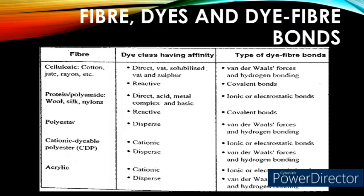In this chart we are going to learn about, for a particular fiber dyed with a particular dye stuff, what type of dye-fiber bond will be formed. For example, cellulosic fibers like cotton, jute, and rayon — if these three fibers are dyed using direct, vat, solubilized vat, and sulfur dyes — the dye-fiber bond formed is van der Waals force and hydrogen bonding.